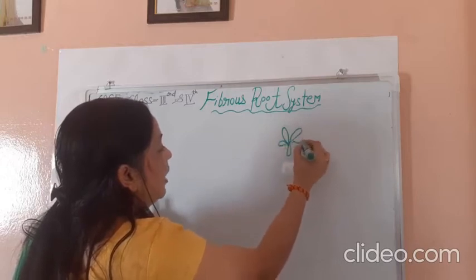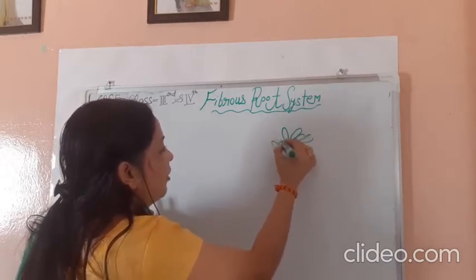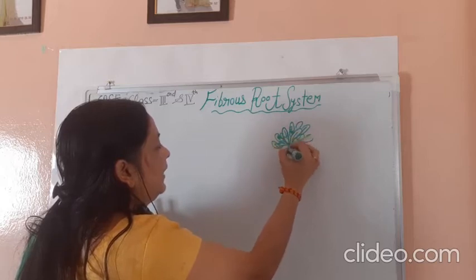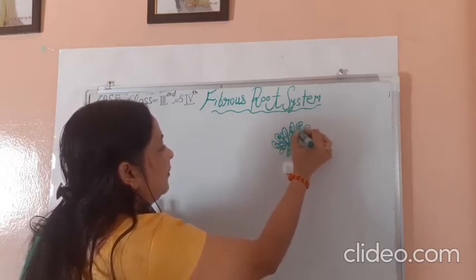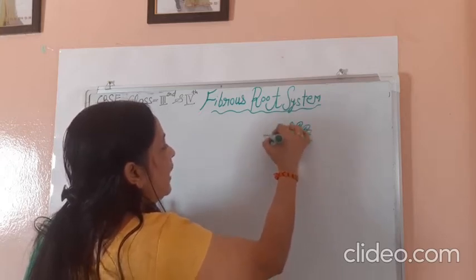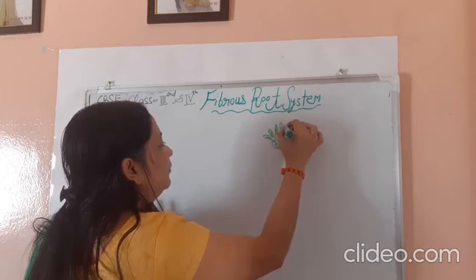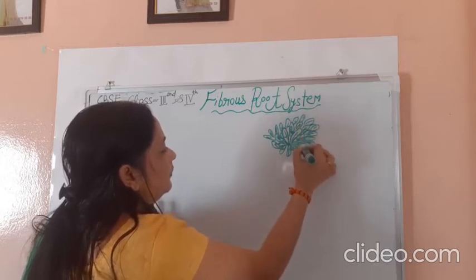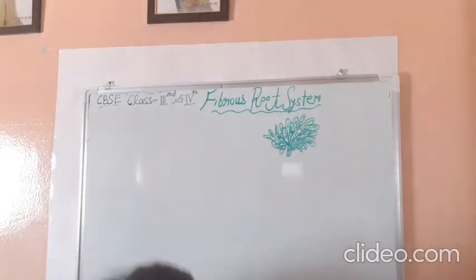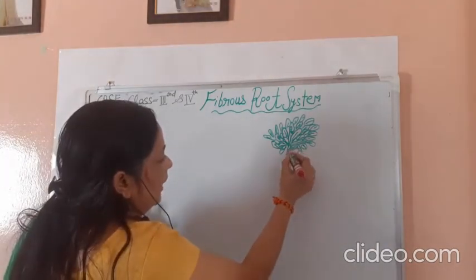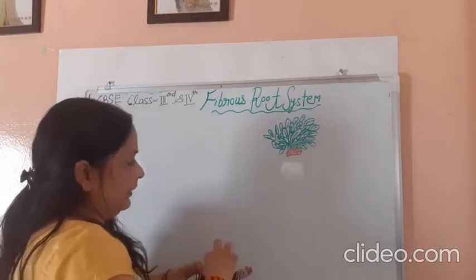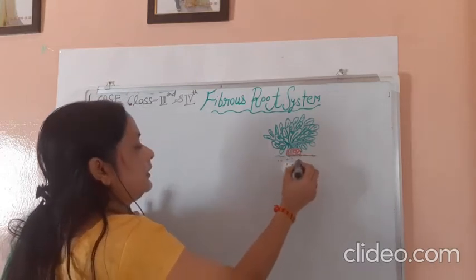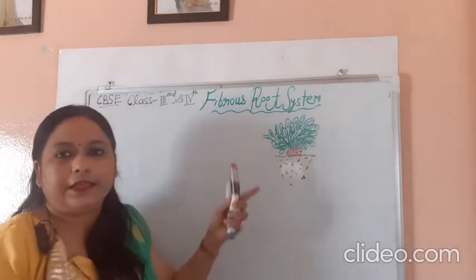Let's start the fibrous root system. First, let's draw a diagram of the fibrous root system. In the fibrous root system, they do not have a main root. This is the ground, and you can see a clear diagram of the fibrous root system on your screen.